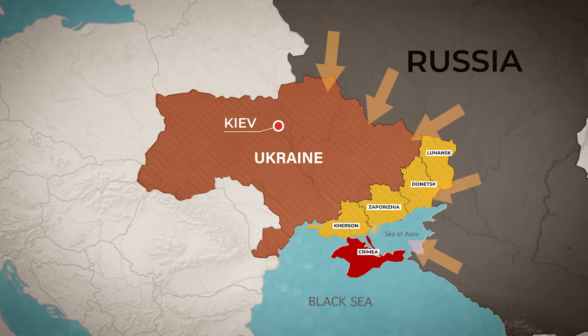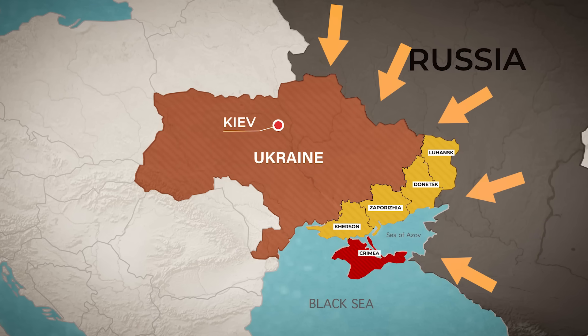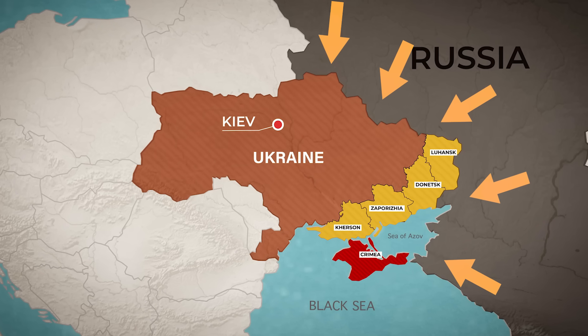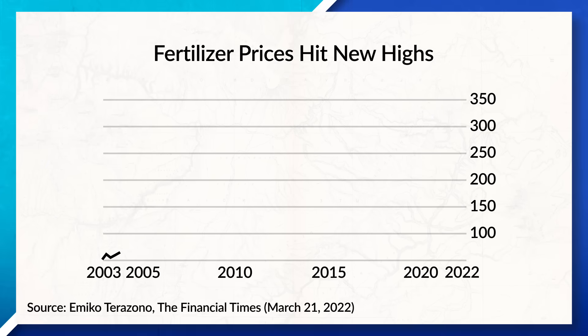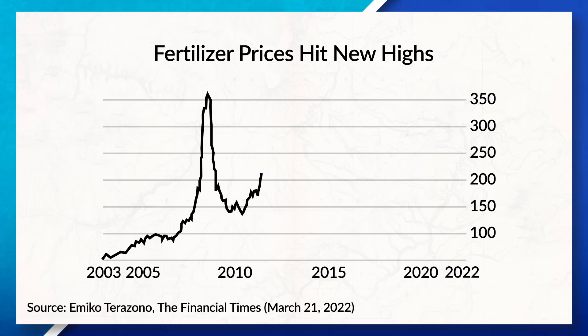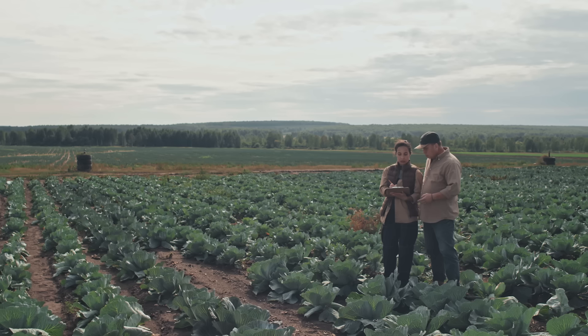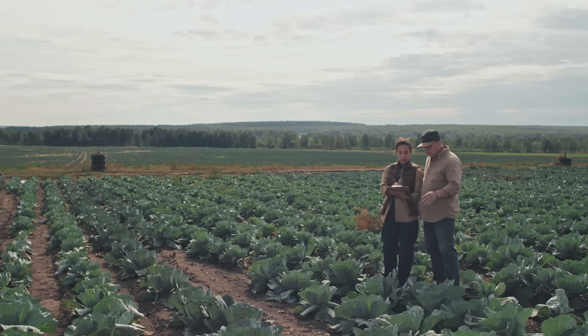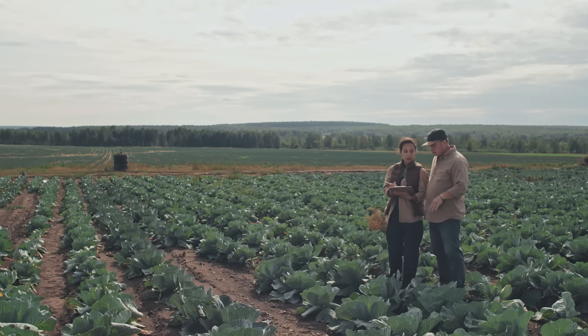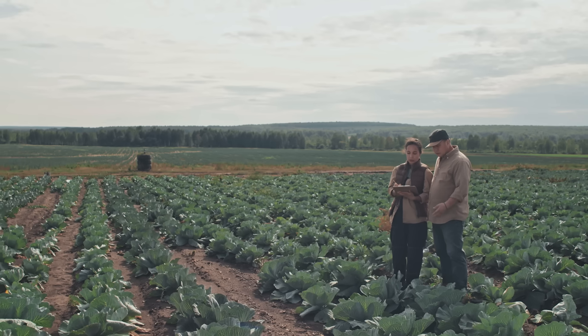However, once the war started between Russia and Ukraine, exports of different agricultural products ground to a halt, causing the global food supply to decrease. To make matters worse, Russia is one of the world's top countries that exports nitrogen and phosphate for fertilizer, leading to rising prices of fertilizers around the world since they are no longer exporting. This has caused farmers to decide between spending more on fertilizers or saving the money and accepting lower yields for the year, which will further strain the global food supply.